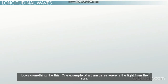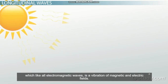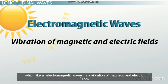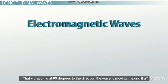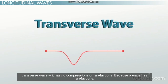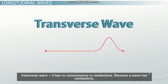One example of a transverse wave is the light from the sun, which, like all electromagnetic waves, is a vibration of magnetic and electric fields. That vibration is at 90 degrees to the direction the wave is moving, making it a transverse wave. It has no compressions or rarefactions.